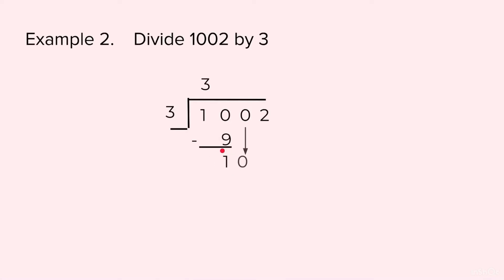We bring the next digit down. Again we have got 10, so again we will write 3 at the top, 9 at the bottom. Subtract — we are left with 1. We will bring 2 down. Now we have got 12.